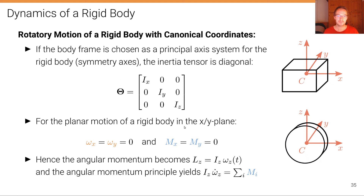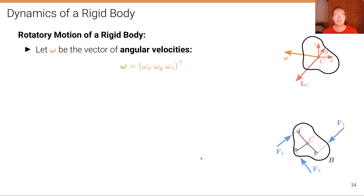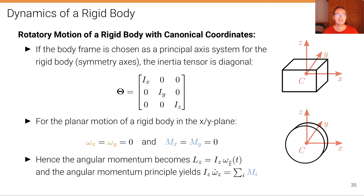For the planar motion of a rigid body in the xy plane — as we consider the vehicle to live in — the angular velocity in x and y directions are zero, and so are the corresponding moments. Therefore the angular momentum becomes a simple scalar: Lc equals Ic times the angular velocity around the z-axis. The angular momentum principle yields the scalar equation Ic times omega-dot equals the sum of all moments.